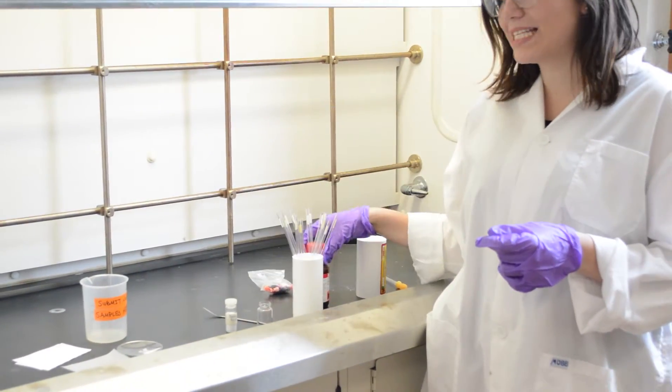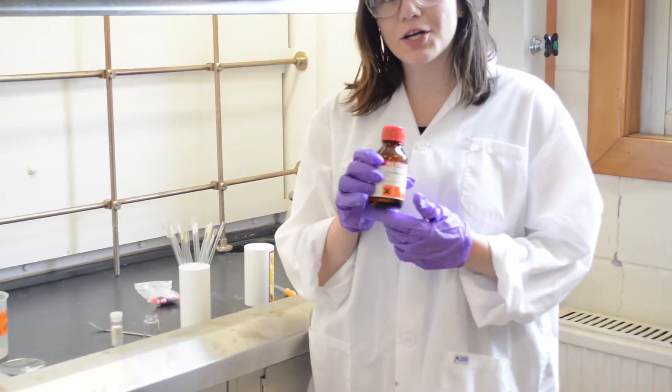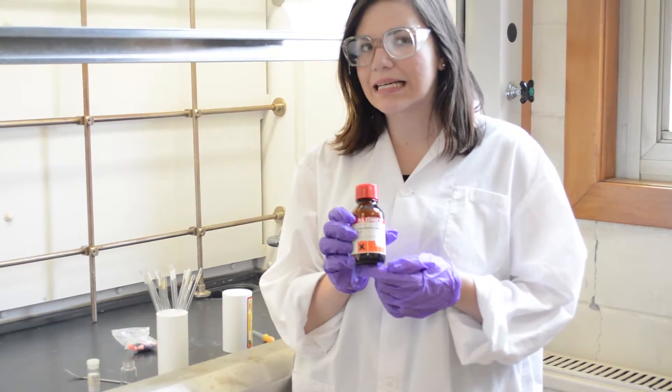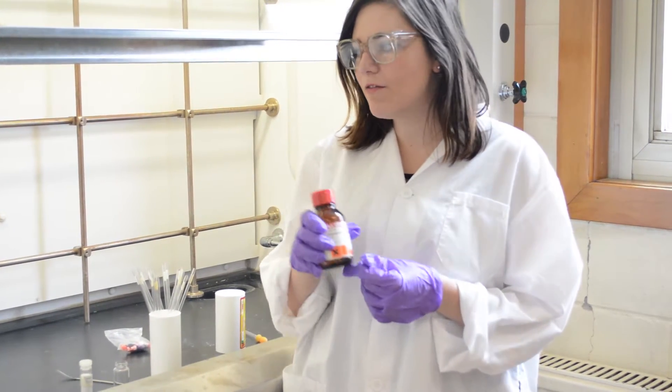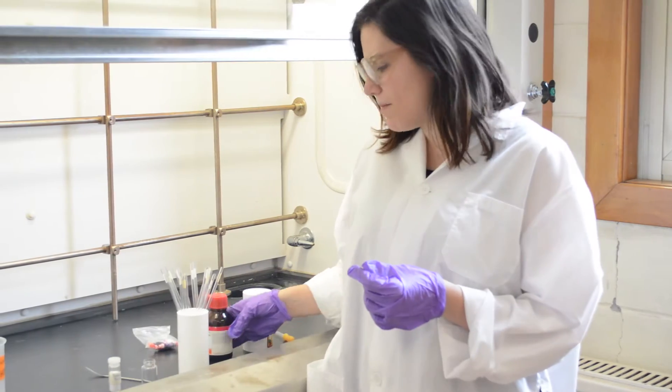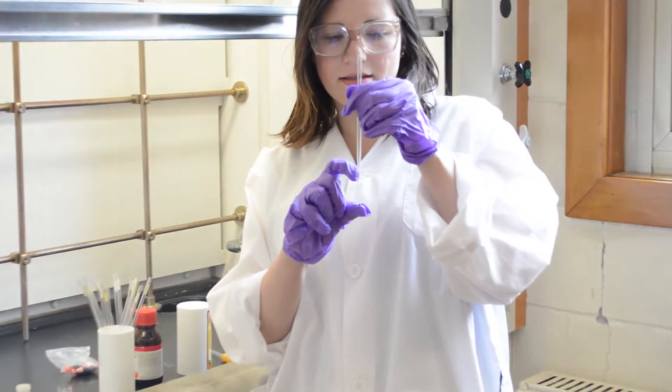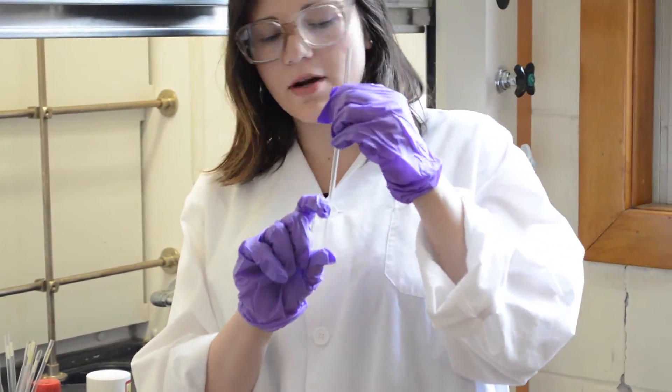Another important thing is the deuterated solvent, of which you're going to use about 0.6 to 1 milliliter. The sample depth is about 4 to 5 centimeters from the bottom of the NMR tube.